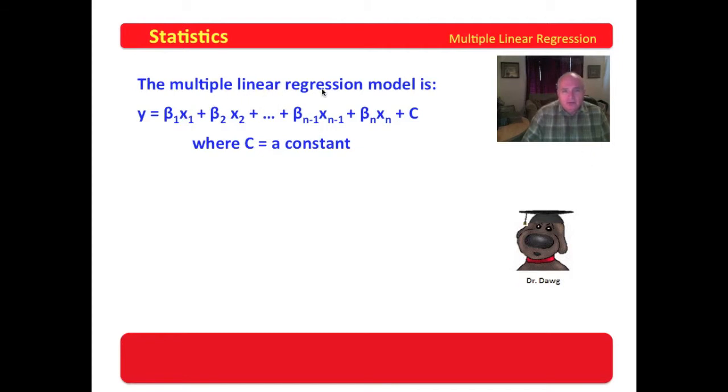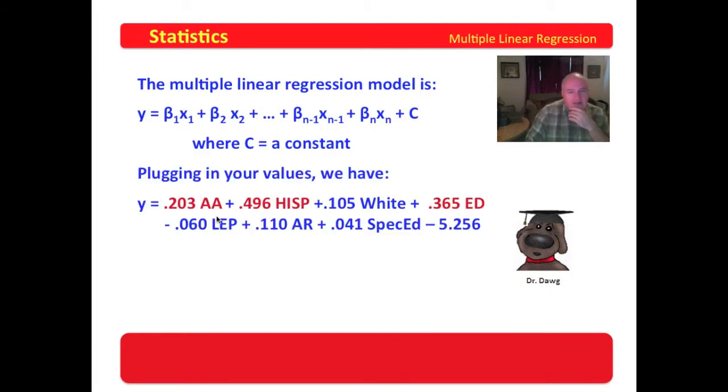Now you will recall that the multiple linear regression model is the predicted value of y, or your dependent variable, is equal to your first beta value times your first independent and so forth and so on, plus some constant C. Now if you'll look at this just a minute, we plug the values in out of your output, we find that it creates a formula like this. The constant is minus 5.256. Now it's interesting that we have 0.203 times the percent African American, 0.496 times the percent Hispanic, 0.105 times the percent white, 0.365 times the percent economically disadvantaged, minus 0.60 limited English proficiency, plus 0.110 times the at risk, plus 0.041 times the special ed.